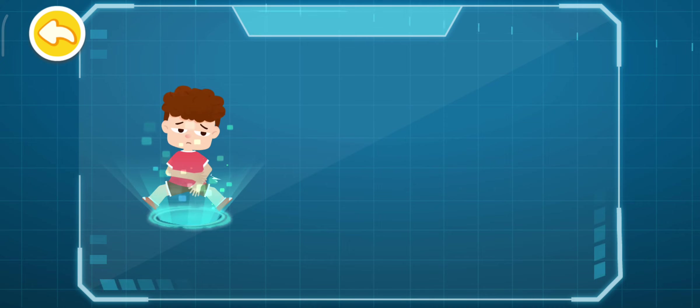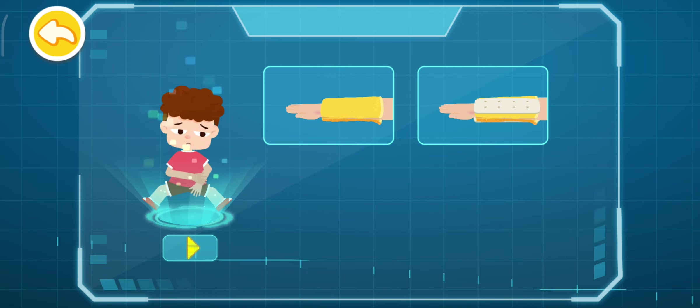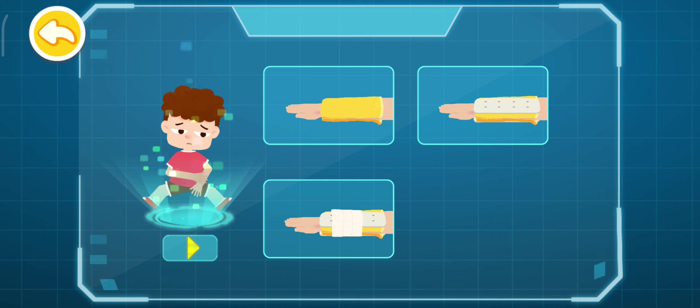First aid for closed fracture. 1. Fill with soft cloth. 2. Secure with a splint. 3. Wrap with a bandage. 4. Suspend with a triangle towel.